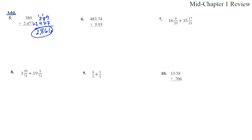Number 6, 483.74 plus 9.93. The decimals are indeed lined up, so we can just do it like how it's written. 4 plus 3 is 7, 7 plus 9 is 16, carry a 1, 1 plus 3 is 4, plus 9 is 13, carry a 1, 1 plus 8 is 9, and 4 plus 0 is 4. Decimals come straight down with addition, 493.67.